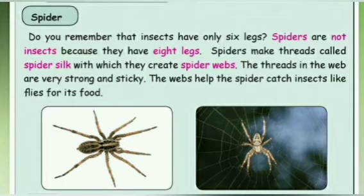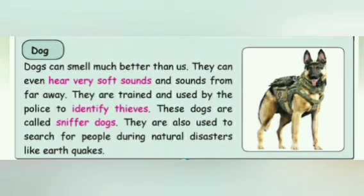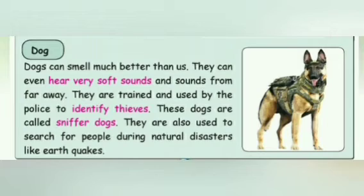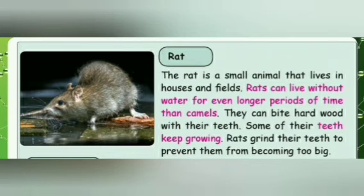We all know dogs have a much better sense of smell than us. They can also hear very soft sounds and sounds from far away. Most dogs are trained and used by the police to identify thieves — such dogs are called sniffer dogs. Dogs are also used to find people during natural disasters like earthquakes.